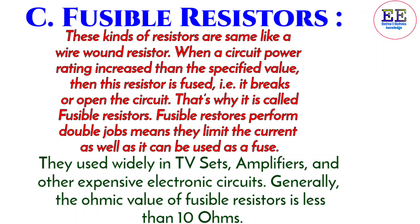Fusible resistors. These resistors are similar to wire wound resistors. When a circuit power rating exceeds the specified value, this resistor fuses — that is, it breaks or opens the circuit. That is why it is called a fusible resistor. Fusible resistors perform double duty: they limit the current as well as act as a fuse. They are used widely in TV sets, amplifiers, and other expensive electronic circuits. Generally, the ohmic value of fusible resistors is less than 10 ohms.